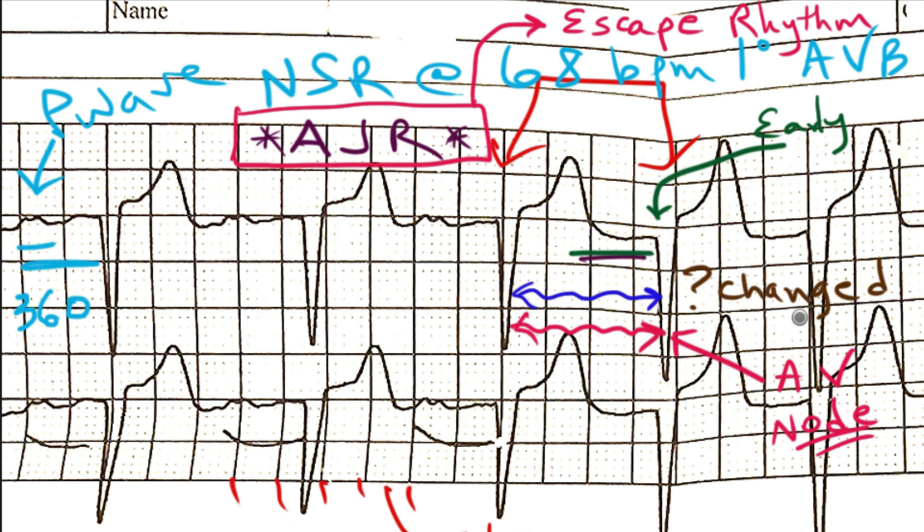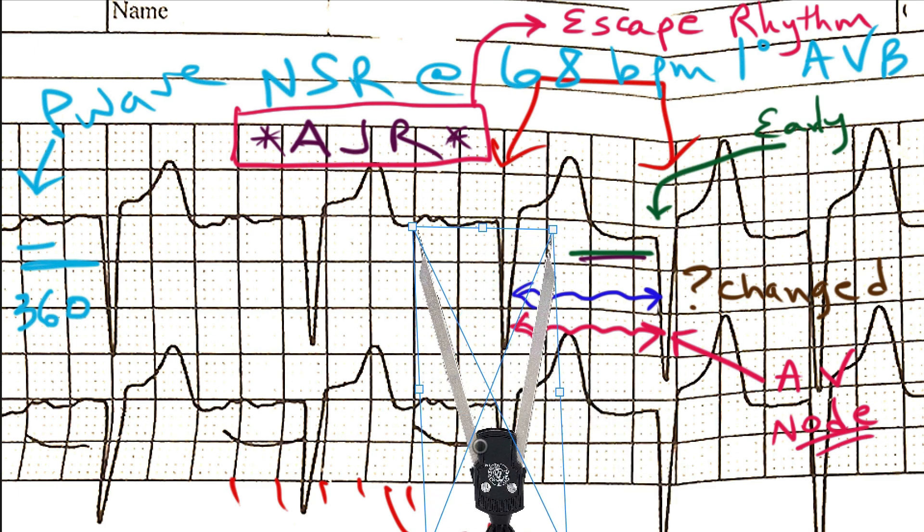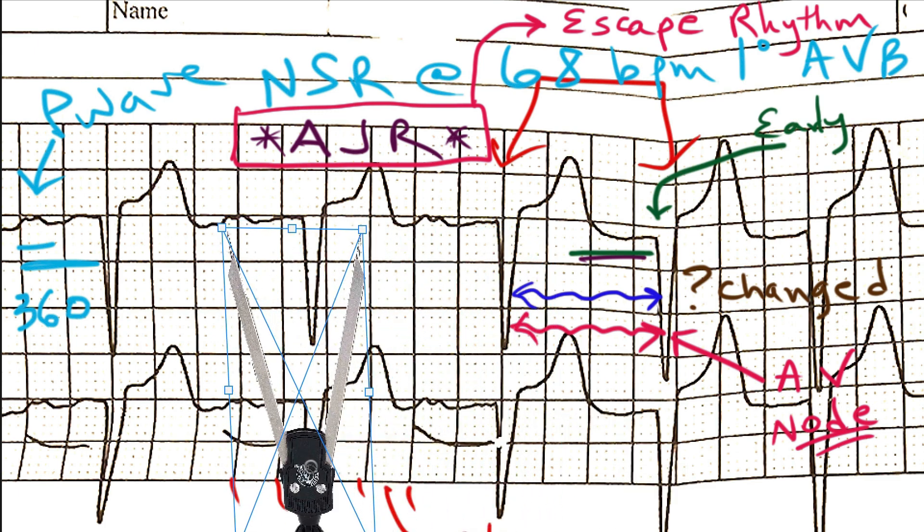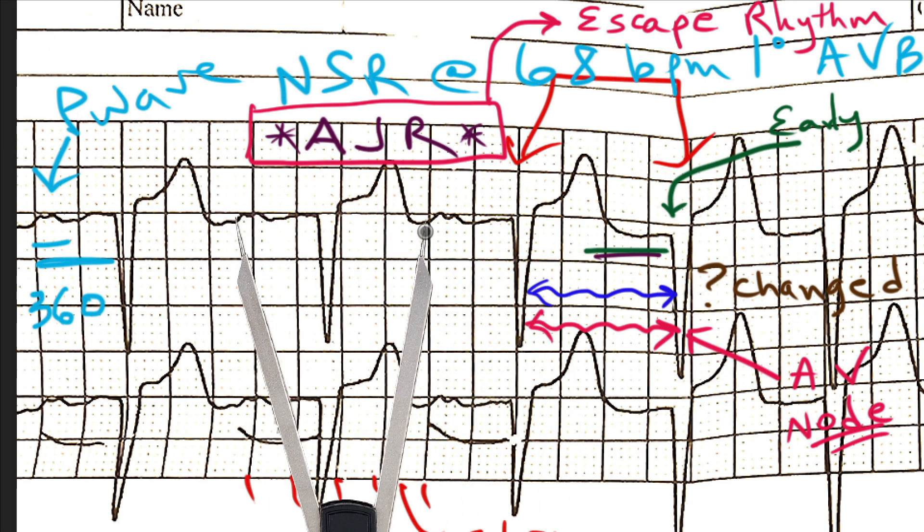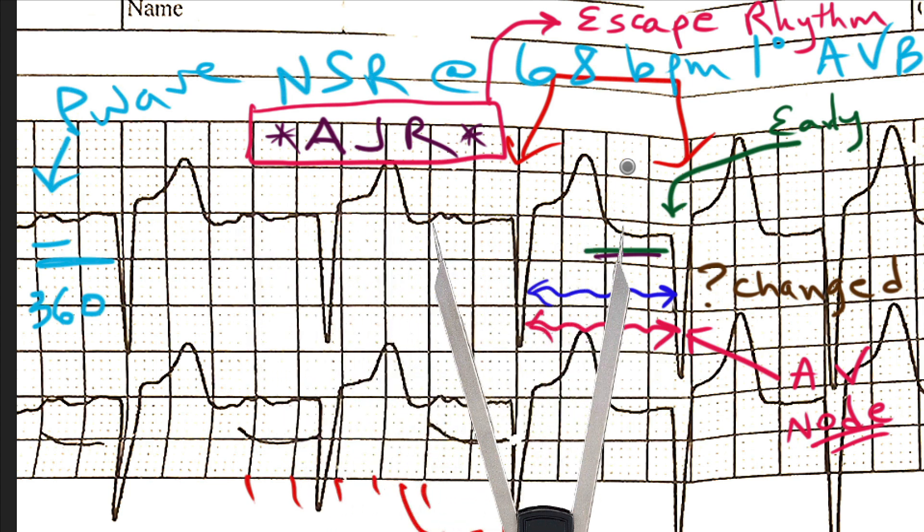But if it comes early, that raises a serious issue. Because if we take our calipers and put them on the P to P interval, the sinus node doesn't know what the AV node is doing. So if we move this over, we would have expected the sinus node to fire at this point, and we would have expected a P wave to appear here.